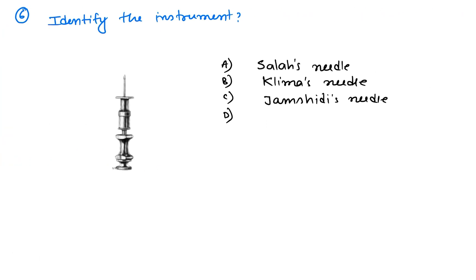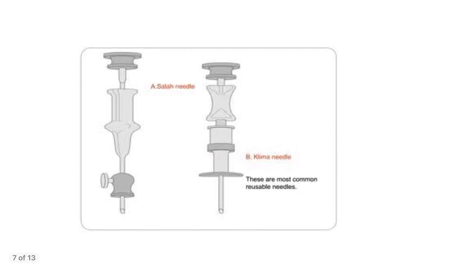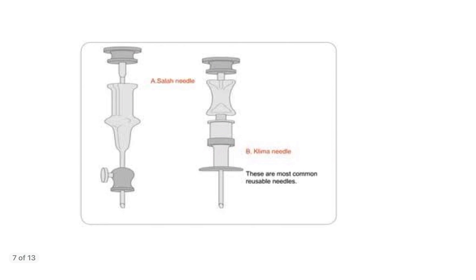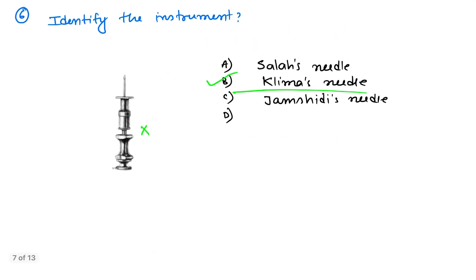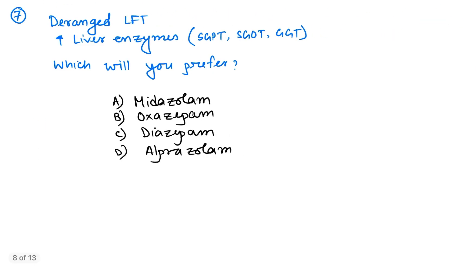Question number six: Identify the instrument. This is a bone marrow aspiration needle. This is Klima's needle because it has no side screw. As you can see here in this image, here are two needles for bone marrow aspiration. This is Salah's needle, which has a side screw. Side screw is present in Salah's needle, and in case of Klima's needle there will be no side screw. So here without side screw, this is Klima's bone marrow aspiration needle.